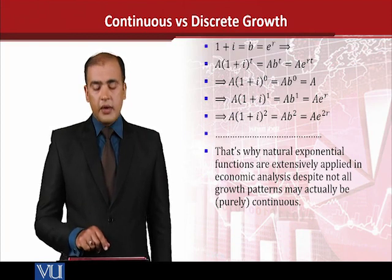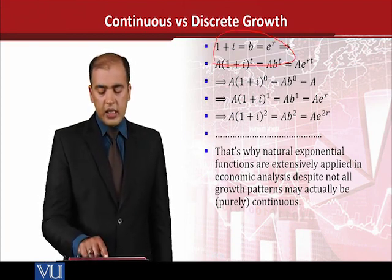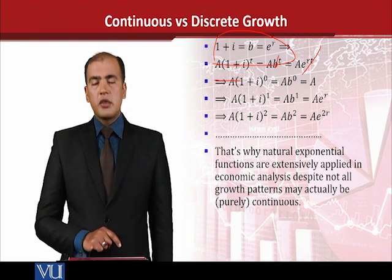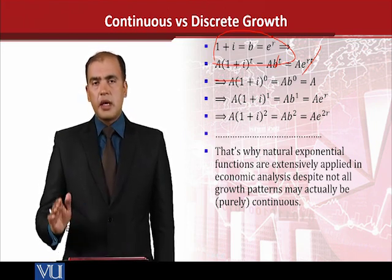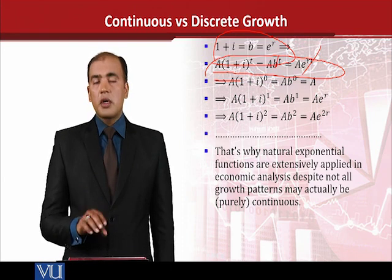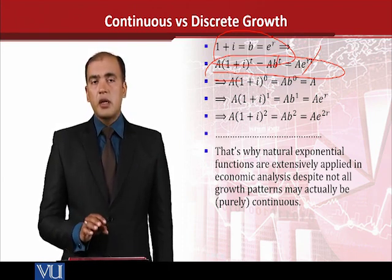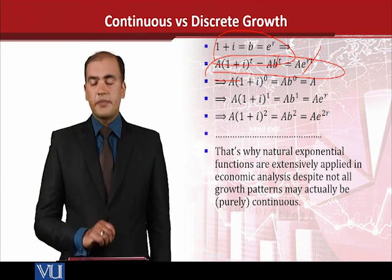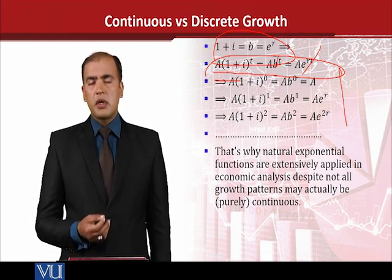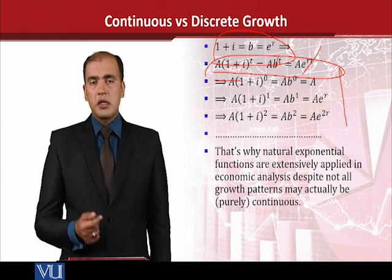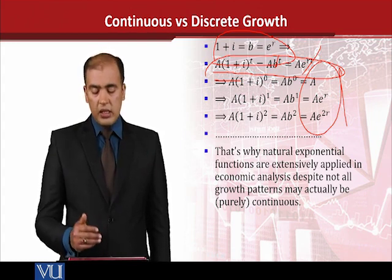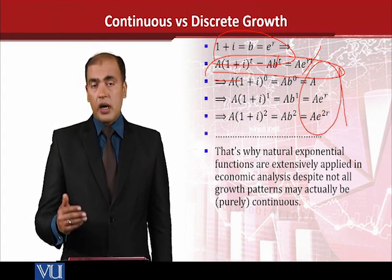Keeping this in mind, we can say that since these three are equal, we can write B in place of (1 plus I), and we can also write e raised to the power r in place of (1 plus I), where T will remain as it is. So we have created a standard form that establishes equivalence between the discrete case and the continuous case — between the exponential base and the natural exponential base. You can substitute experimental values of T yourself: 0, 1, 2 and so on. You will see the answer builds up in a way that is quite intuitive: A, then A into e^r, and so on.